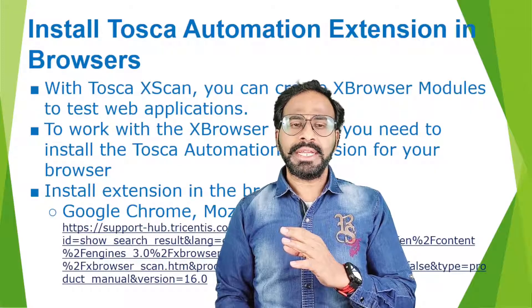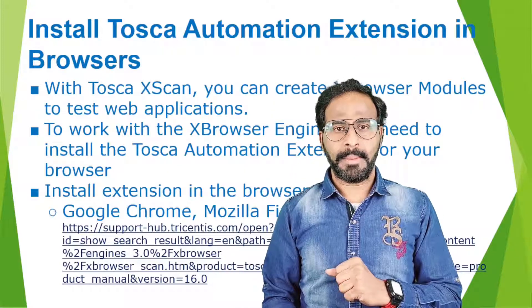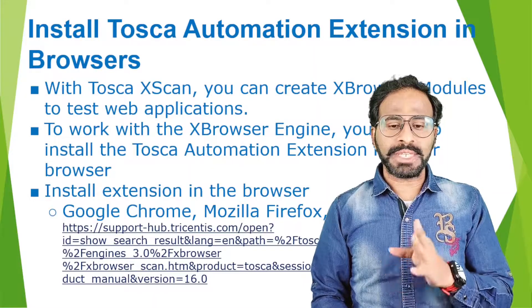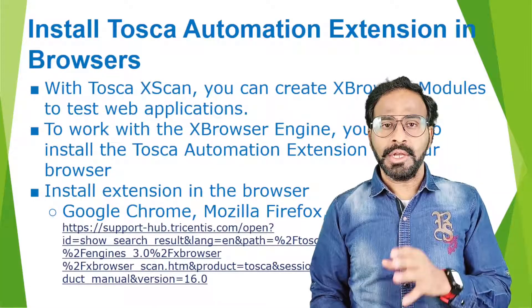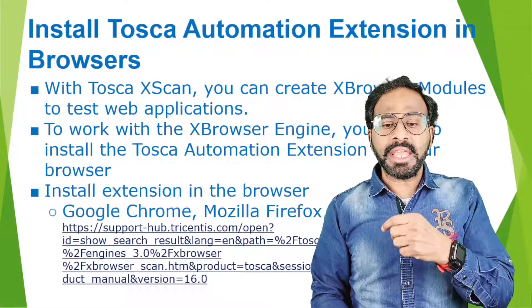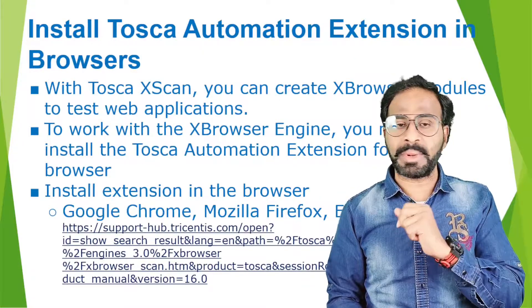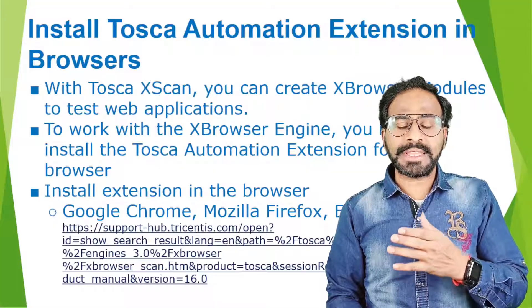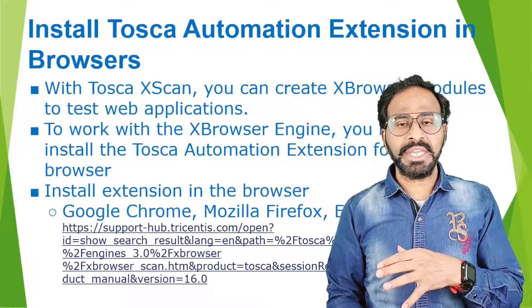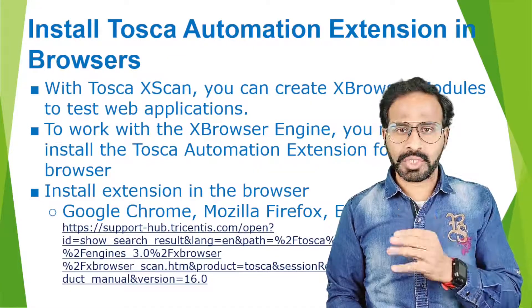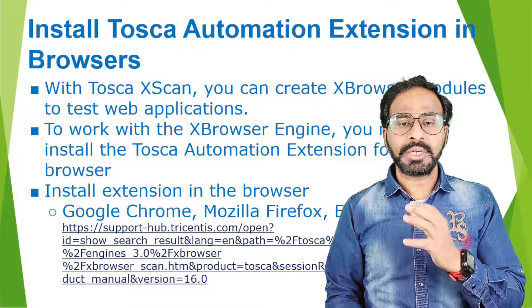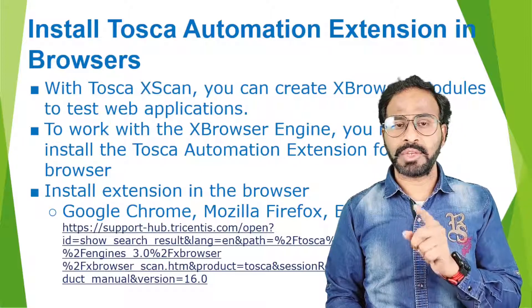Why do we need the Tosca Automation Extension? When you are automating any application using Tosca, we use Tosca Xscan. When you scan your page using Tosca Xscan, it creates X browser modules to test your web application. To work with these X browser modules, an X browser engine has been built by Tricentis Tosca, and to work with this X browser engine, you need to install the Tosca Automation Extension for your browsers.